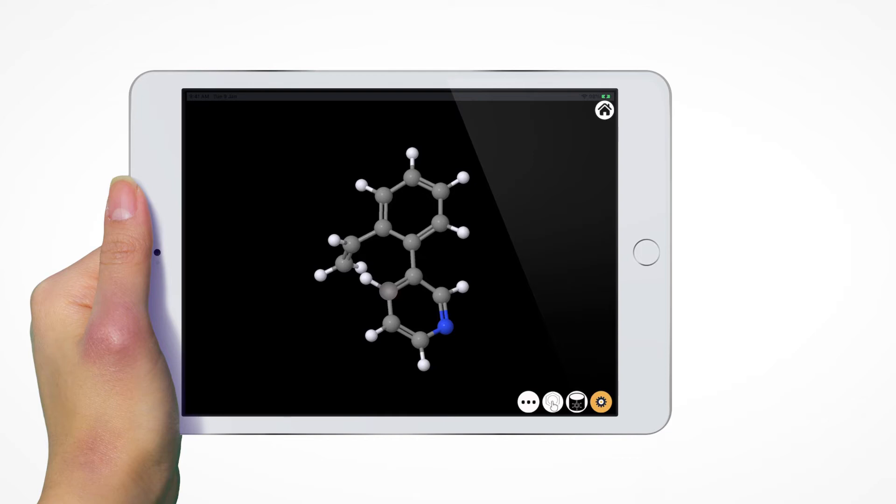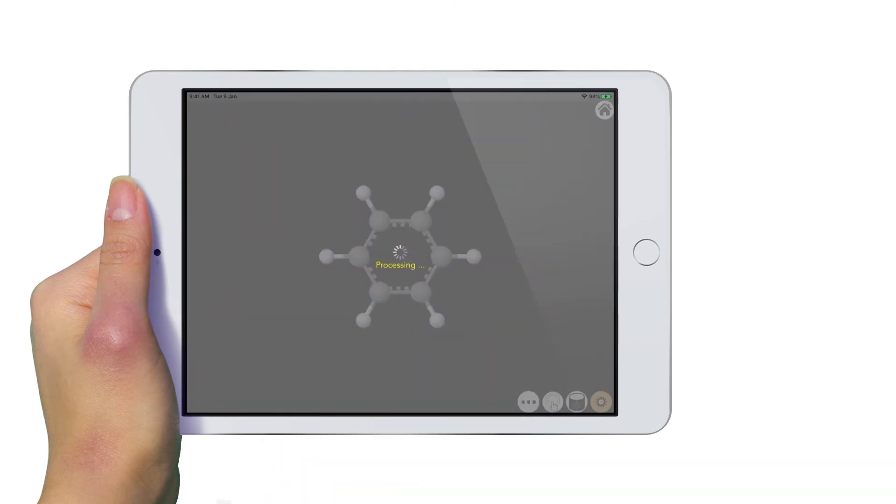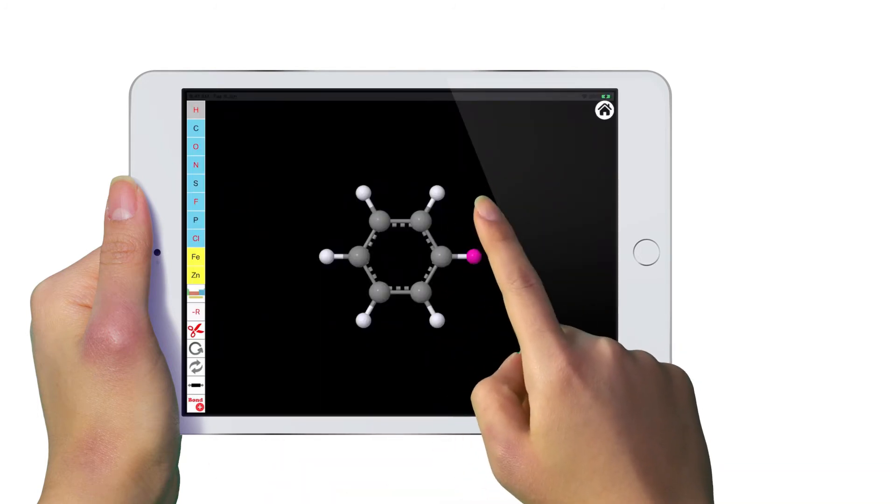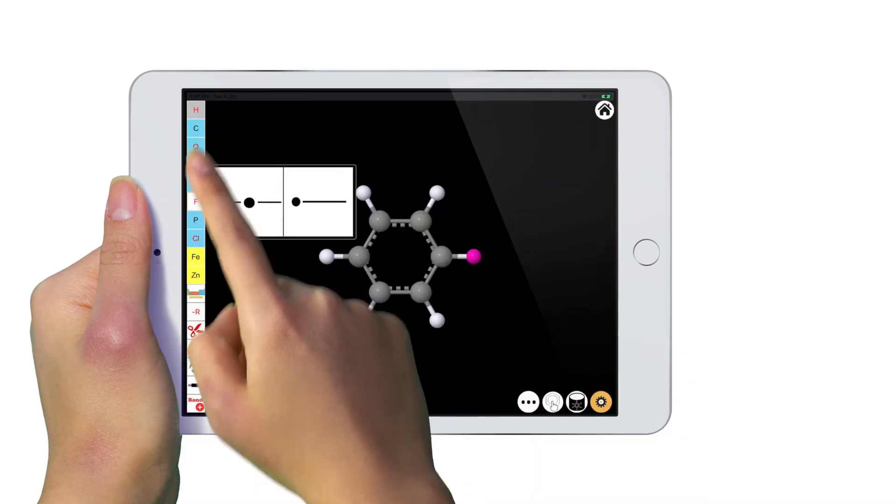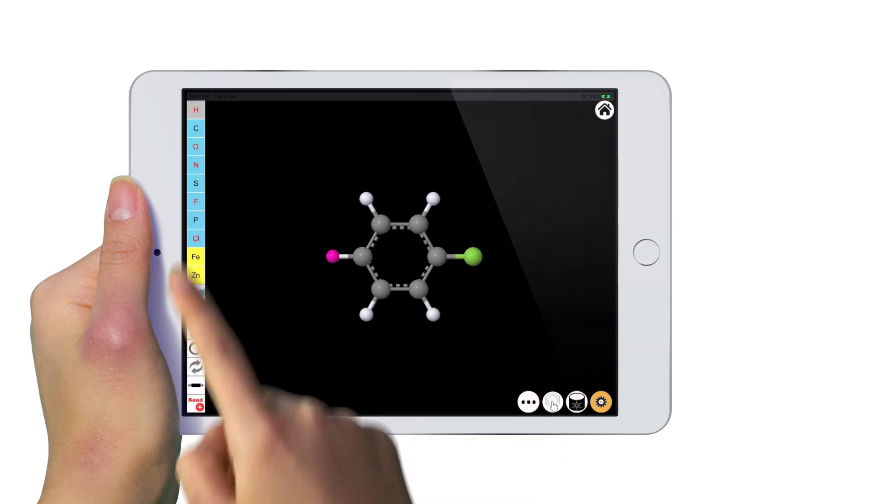You can continue to edit the molecule at this point, but here are a couple of quick tricks. For simple ring molecules, using the ready-made rings and fragment libraries can help you build your molecule quickly. Here's an example.